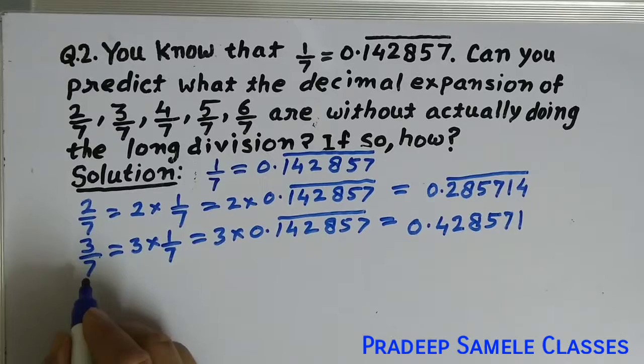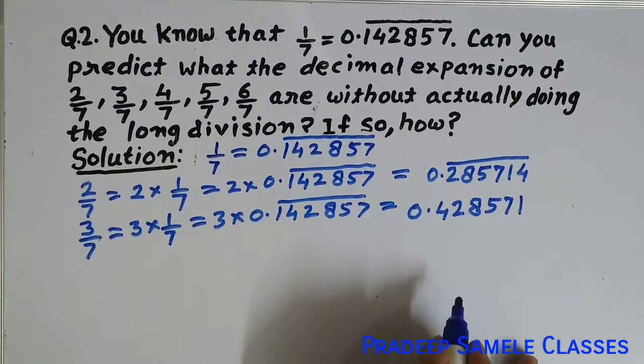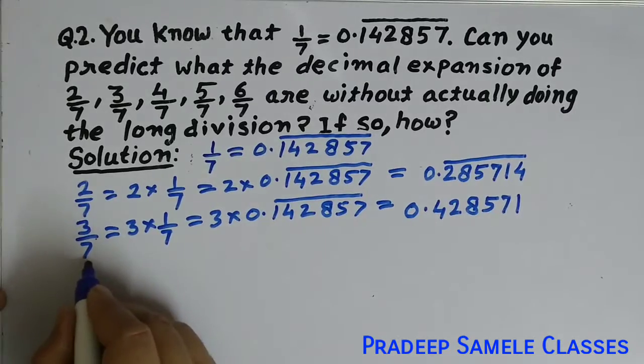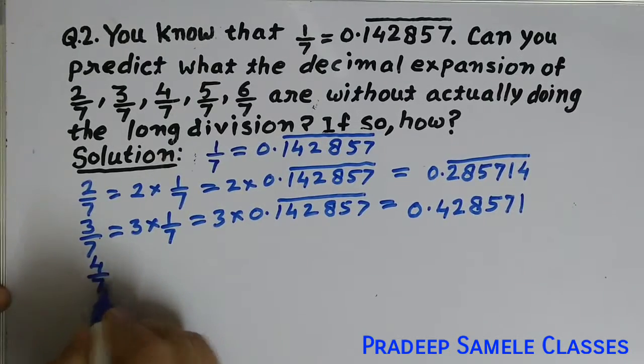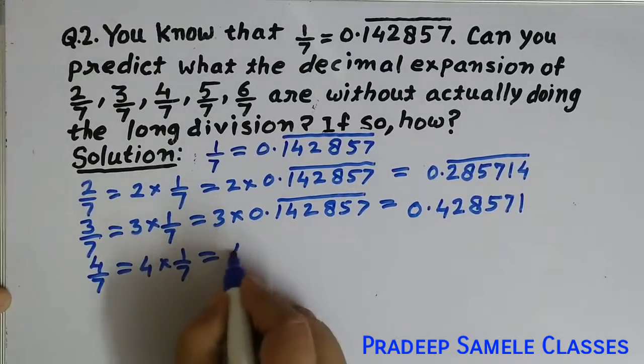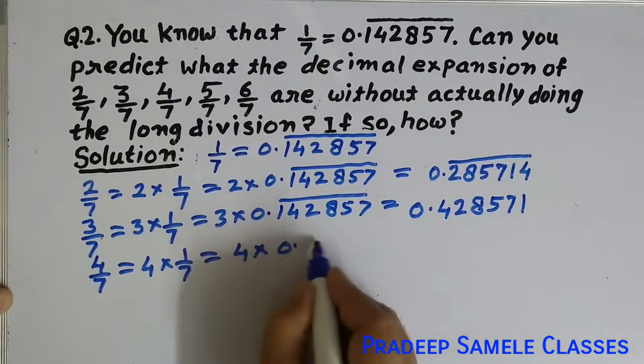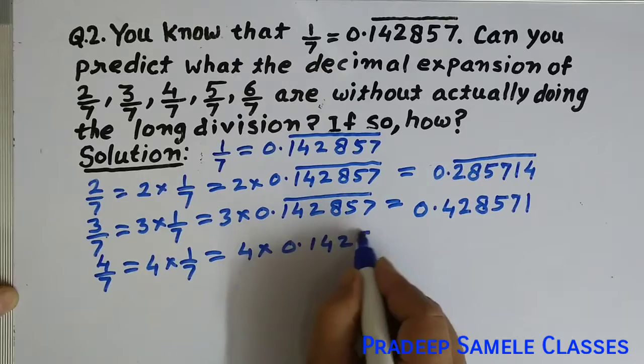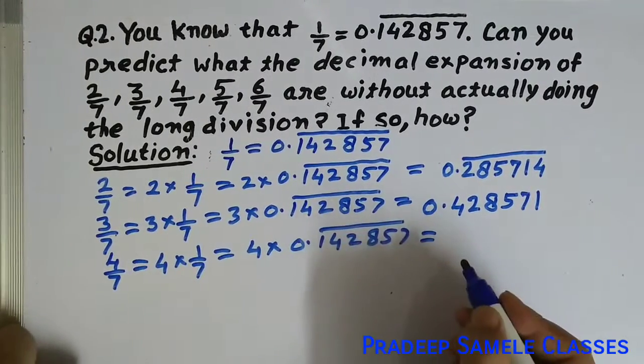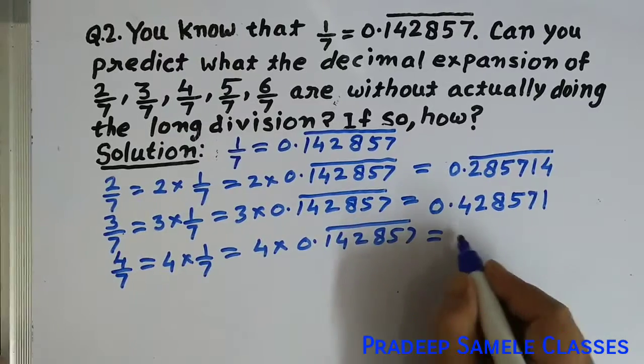In this way, we will find all these values and write them down. Now you can easily understand the pattern. For 4 by 7, we calculate 4 into 1 by 7, which equals 4 into 0.142857 bar.